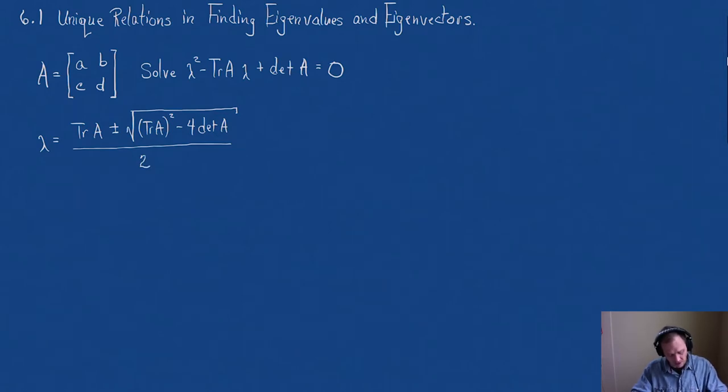So, watch what happens. In other words, let's take lambda 1 plus lambda 2 and see what we get. Lambda 1 would be the trace of A plus, and then I'm just going to write a square root for all that stuff that's in the square root over 2. Plus lambda 2 is the trace of A minus that square root we call all that stuff underneath there, the discriminant, over 2.